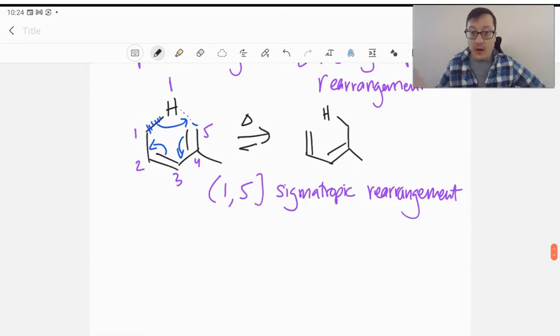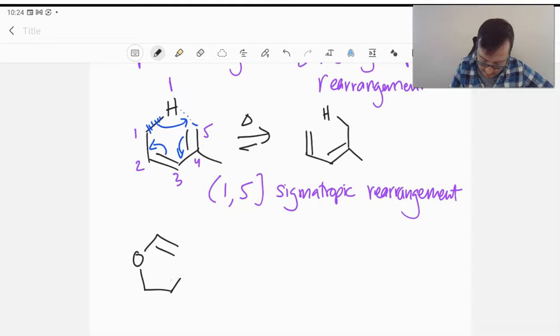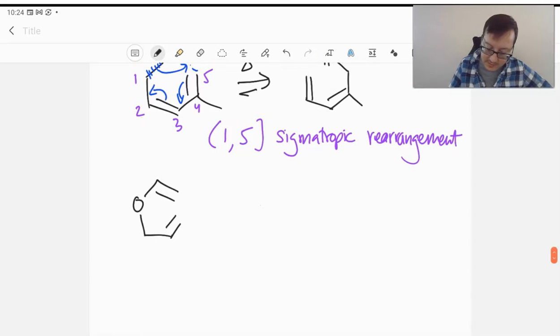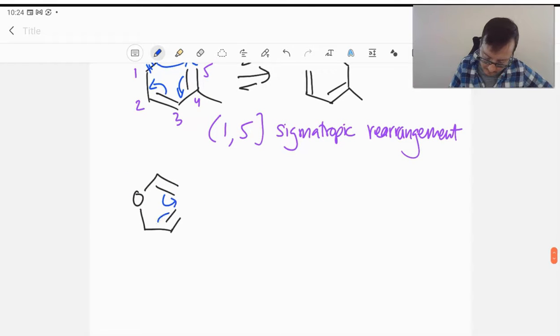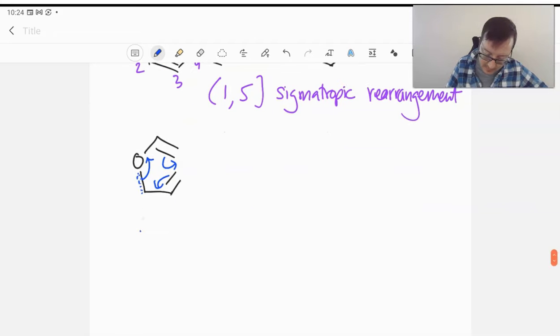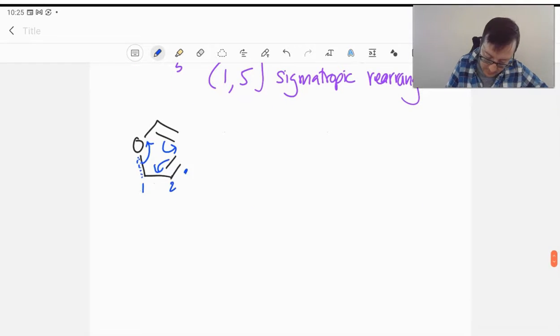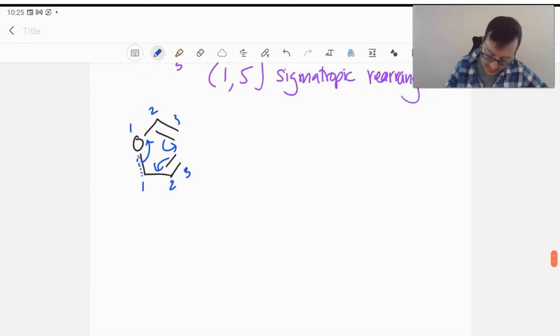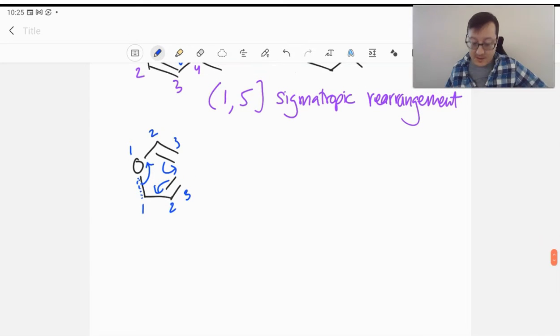In the case that we have other heteroatoms that are involved, such as the case of having an oxygen, if we do a sigmatropic rearrangement here, notice the sigma bond that's breaking. This is the sigma bond that's breaking here. Notice we have 1, 2, 3, 1, 2, 3. This will be a 3,3-sigmatropic rearrangement, specifically called a Claisen.